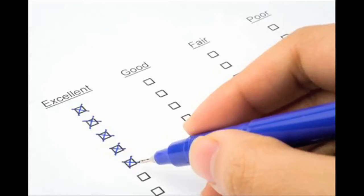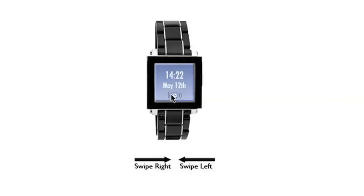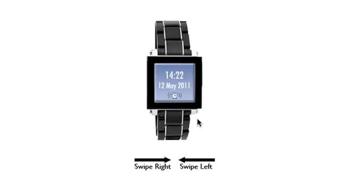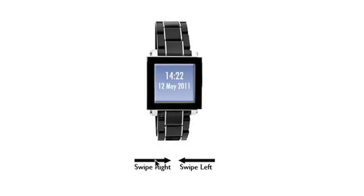In order to evaluate the effectiveness and usability of our design, we allowed users to test our interface and provide feedback. Seven users completed six tasks before answering a questionnaire. In the first task, the user adjusts the watch settings to display time in 24-hour format. In the second task, the user adjusts settings to display the year. In the third task, the user turns the alarm off. In the fourth task, the user navigates to the screen to change the background color. In the fifth task, the user navigates to the screen to change the vibration pattern of the alarm.